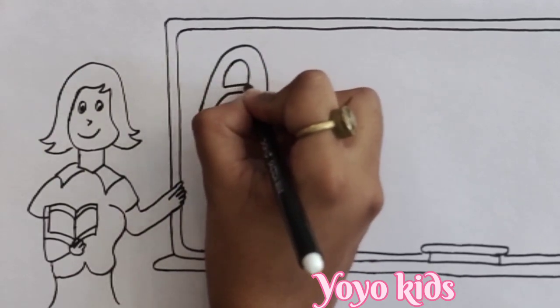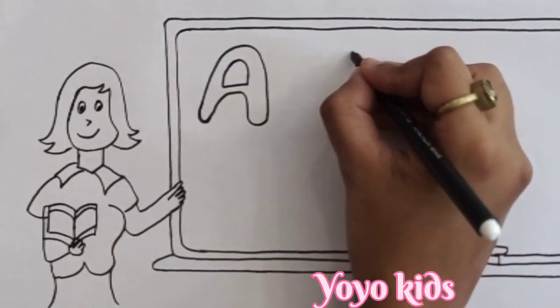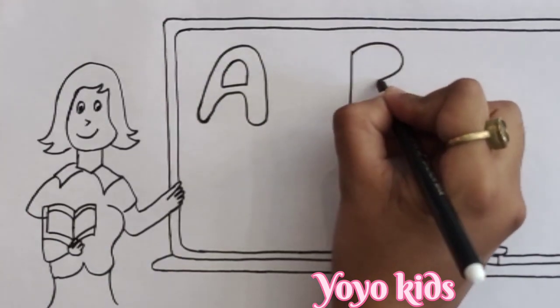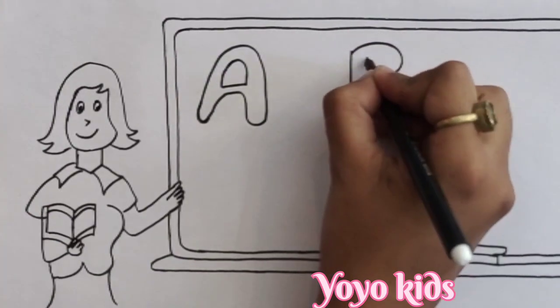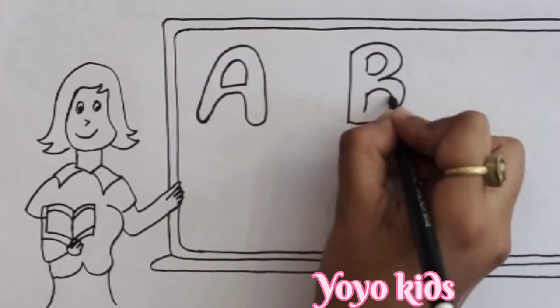A for Apple. A, B, C, D, E, F, G. B, B for Boy.